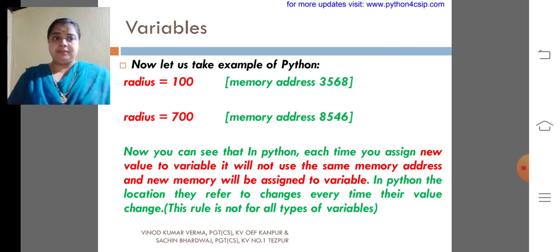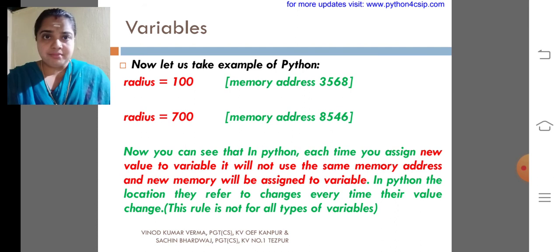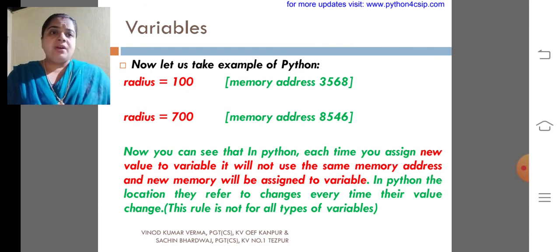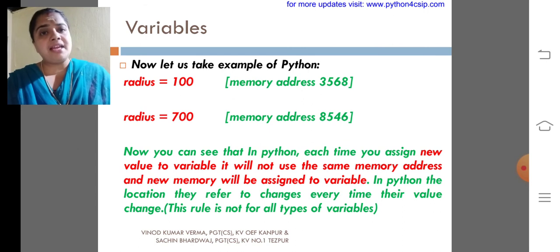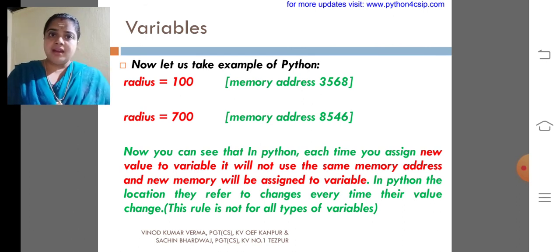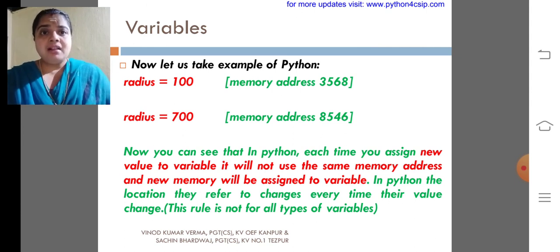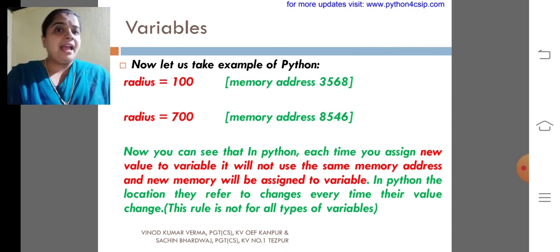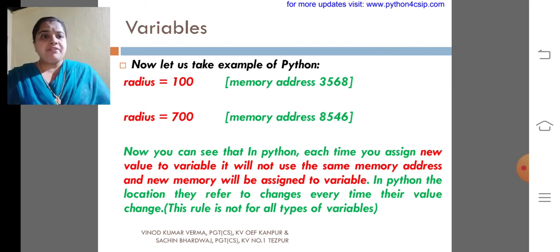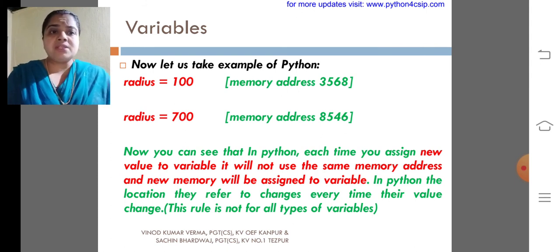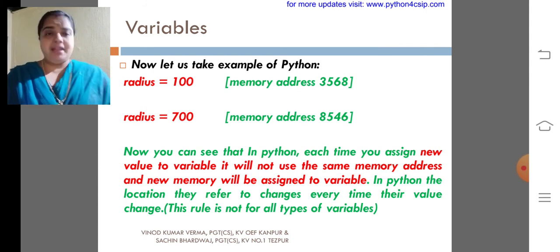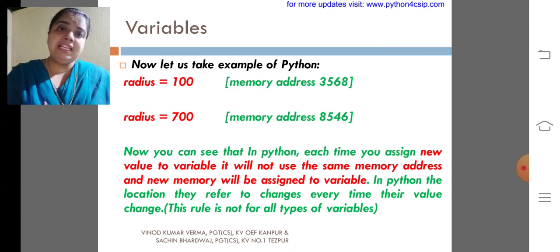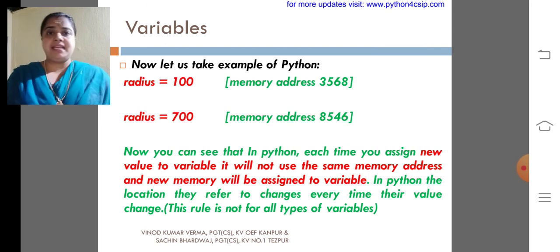That is the specialty of Python. If we have a variable and we assigned a value 100, and in future at the same variable you are trying to assign a new value called 700, what happens? The variable will use different memory addresses. For 100, it will use a memory address. For 700, it will use another memory address. In Python, location they refer to changes every time their value change. This rule is not for all data types. Only for integer, float. It will be changed in string, list, dictionary, etc.